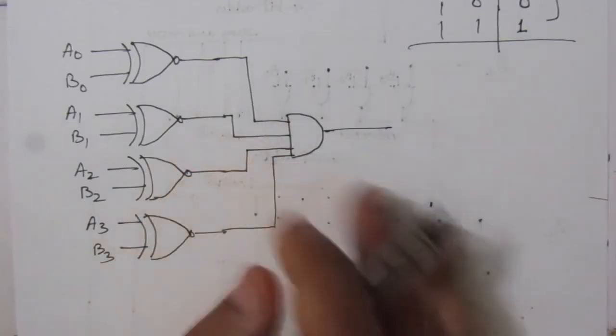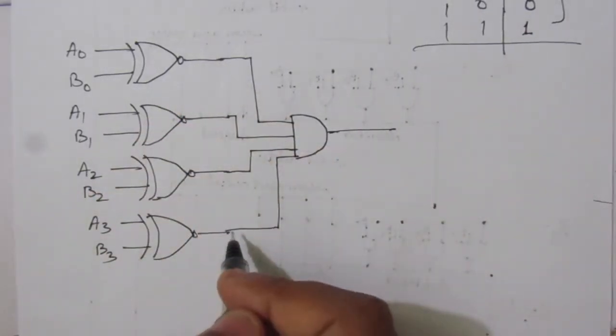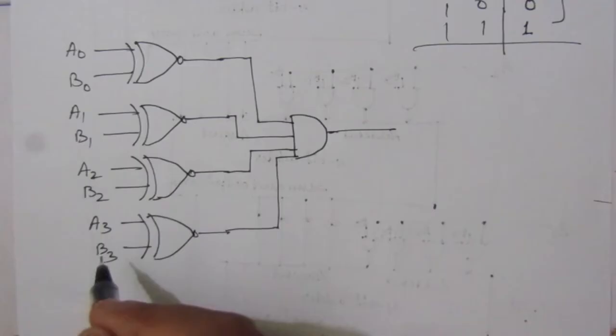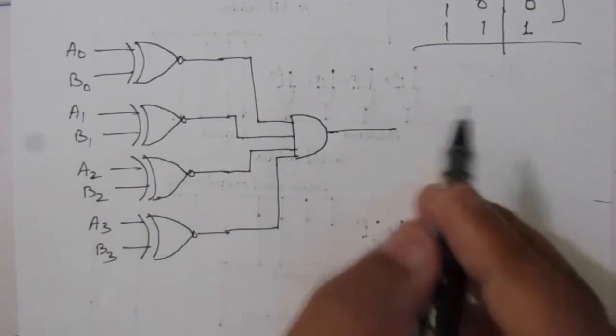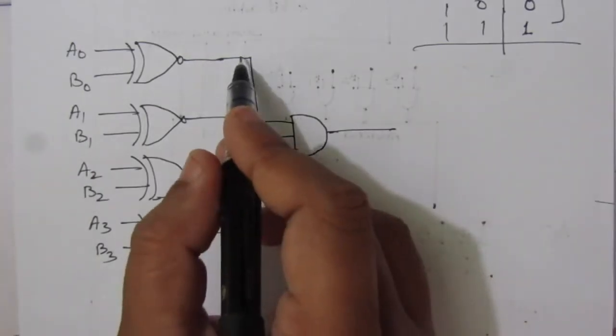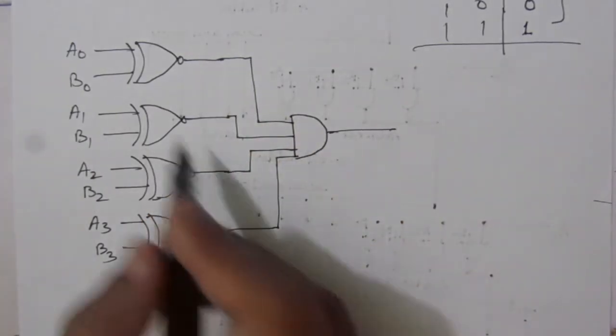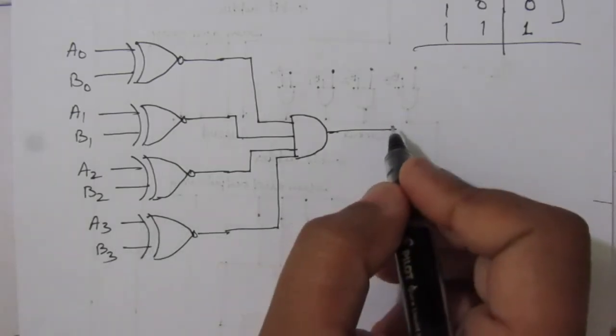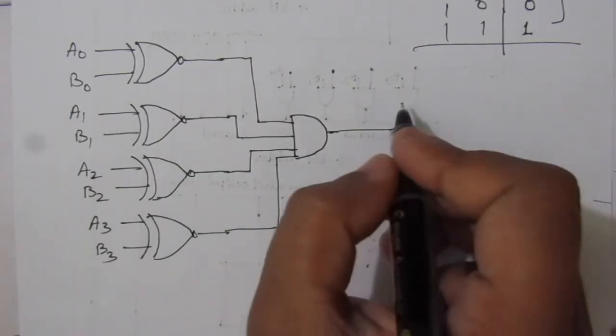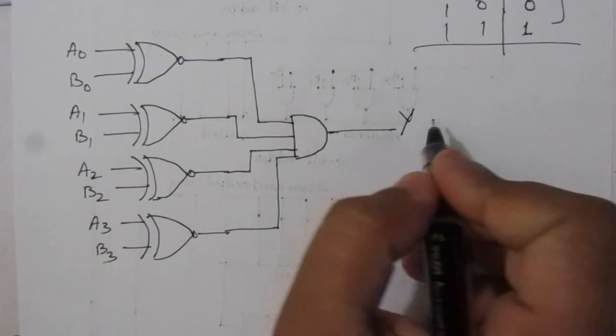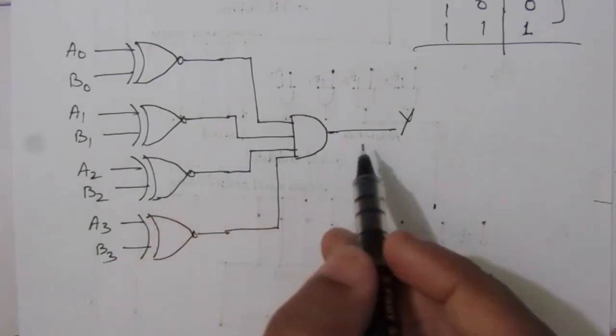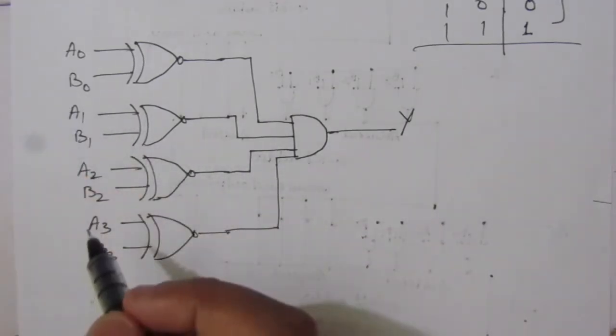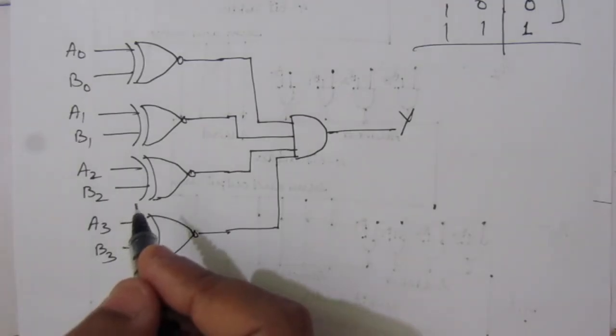So whenever any one of these values will be 0, that means any one of the comparison values is not equal, then this AND gate will give 0 value. Whenever we have all these values equal to 1, that means all these bits are equal, then we will have 1 output. So this is the output. This is the combinational circuit that compares two 4-bit numbers and it will give output equal to 1 whenever all the 4-bits are equal to their respective 4-bits from the other number.